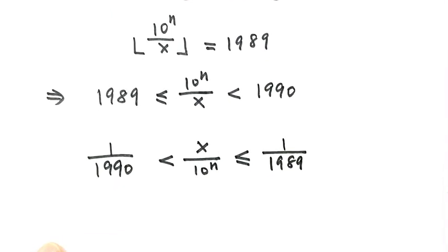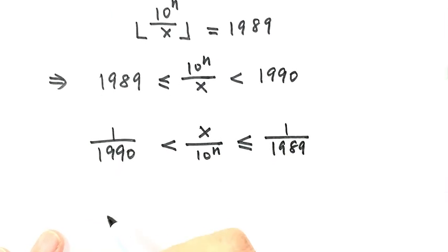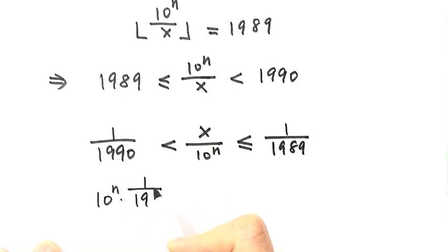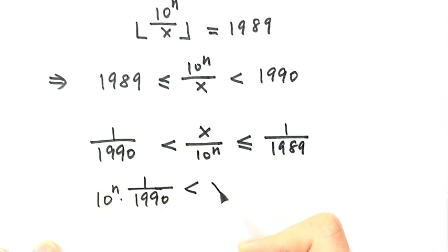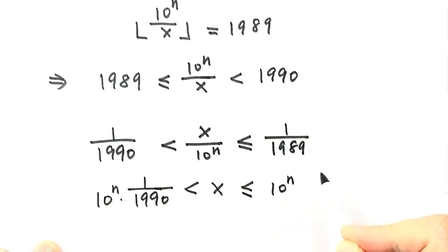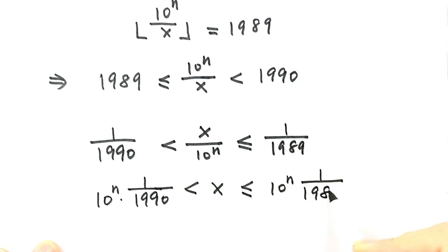Next, multiply all parts by 10 to the power n. Then we get 10 to the power n times 1 over 1990 on the left, x in the middle, and 10 to the power n times 1 over 1989 on the right.